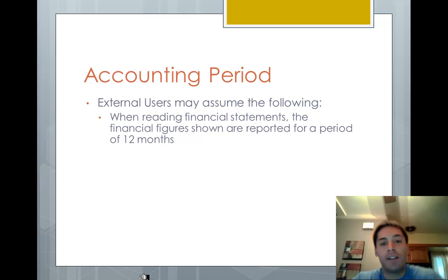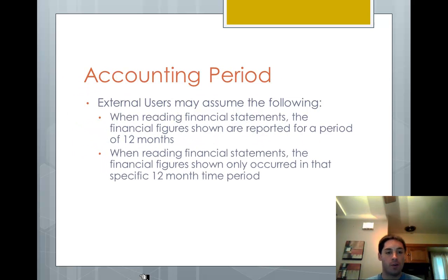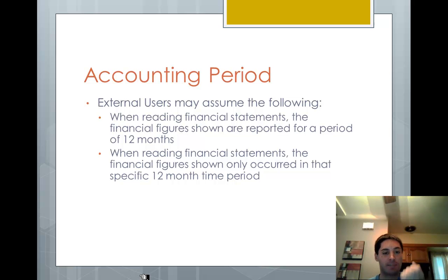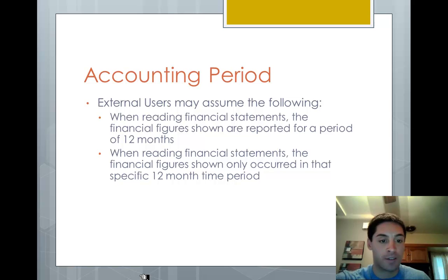External users may assume that when reading financial statements, the figures that they read are reported for a period of 12 months. In addition, you can assume that the financial figures shown only occurred in that specific 12-month time period. In other words, if you're reading the financial figures for the year 2011, you can assume there's nothing in there from 2010, nothing from 2009, and nothing they think is going to occur in the future, like 2013. It's for that specific time period.